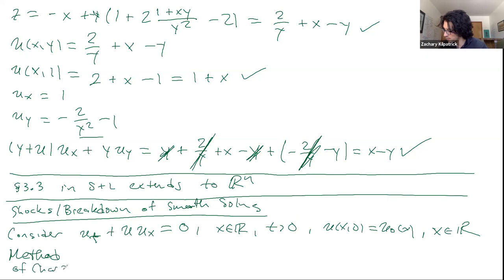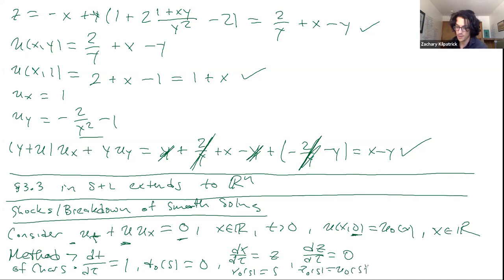We've solved this before, but let's take our method of characteristics. We don't have y and x anymore, we have t and x. There's no reason why we can't just look at the coefficients in front of each part of the equation. My characteristic equation for t should be dt/dτ equals 1, because there's just a 1 in front of the u_t term. My initial condition should be t_0(s) equals 0. The dx/dτ is going to equal z in this case, and x_0(s) equals s. And then dz/dτ equals just 0, and z_0(s) equals u_0(s).